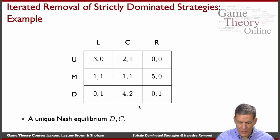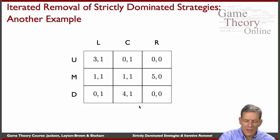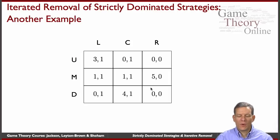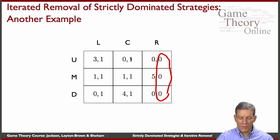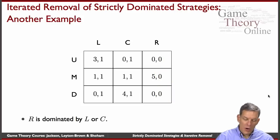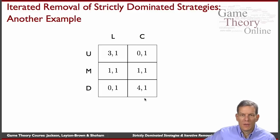So we've got the unique Nash equilibrium D, C. That worked very well in that game. Let's take a look at another game where I slightly change the payoffs of this matrix. In this case, R is still dominated — R always leads to zero for the column player, and left or center give higher payoffs. So R is dominated by either L or C. We can get rid of R and then go through again. In this particular situation, something interesting arises.